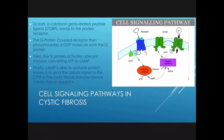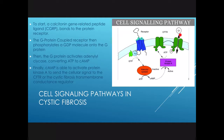This is how the cell signaling pathways normally work in the cystic fibrosis gene. To start, a calcitonin gene-related peptide ligand, or CGRP, bonds to the protein receptor. The G-protein coupled receptor then phosphorylates with the GDP molecule onto the G-protein. Then the G-protein activates adenylyl cyclase, converting ATP to cAMP. Finally, the cAMP is able to activate protein kinase A to send the cellular signal to the CFTR gene so that chloride ions can pass through the cell membrane easily.